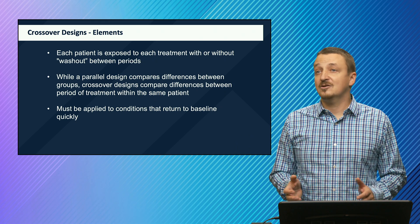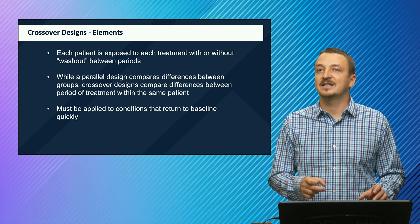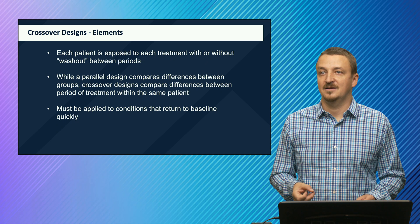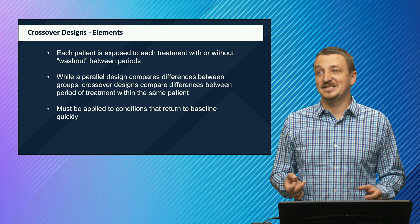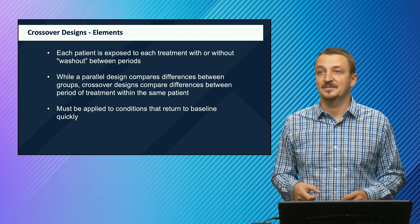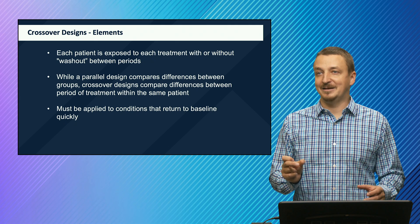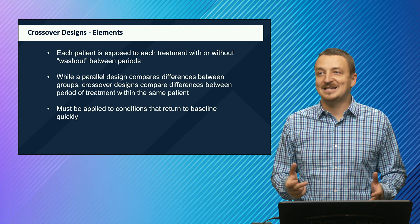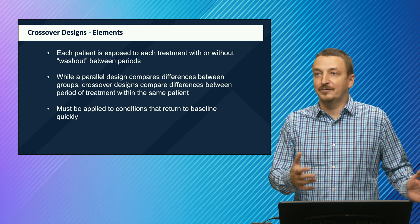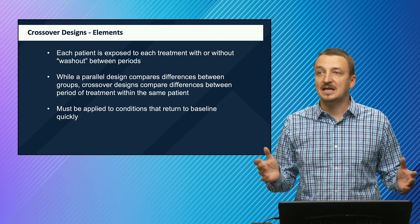While a parallel design compares differences between groups, crossover designs compare differences between periods of treatment within the same patient. This is an important advantage in terms of matching because it is the same patient. However, it must be applied to conditions that return to baseline quickly. It is not good for a curable disease, for example, because the condition might be cured after the first intervention. It must be something that really goes back to baseline — pain would be an example.